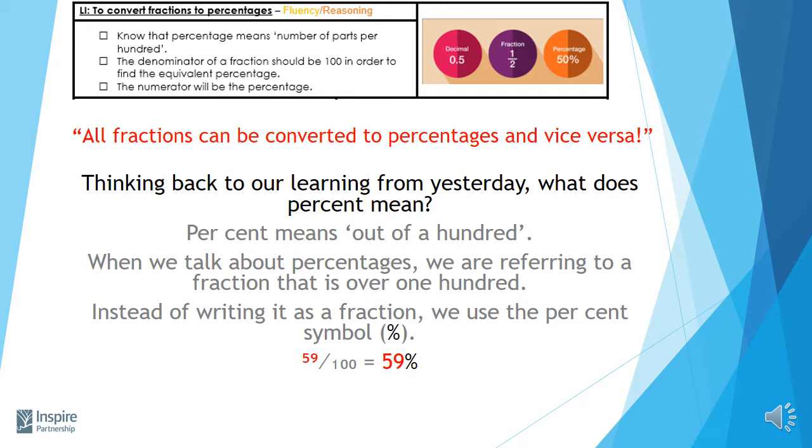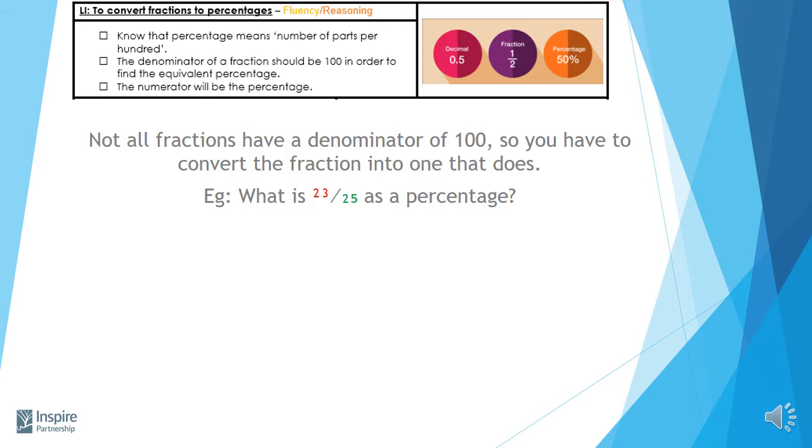In effect, all it really is telling us, in this example you can see, is 59% is effectively 59 over 100. Not all fractions have a denominator of 100 though, so you need to convert the fraction into one that does.